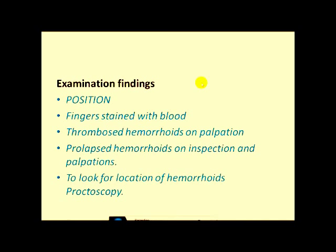On examination, the patient should be positioned in Sims position or one of the other positions. The finger can be stained with blood if there are actively bleeding hemorrhoids on PR examination. Thrombosed hemorrhoids can be felt on palpation. Prolapsed hemorrhoids can be seen from outside. To look for the location of hemorrhoids we do proctoscopy.